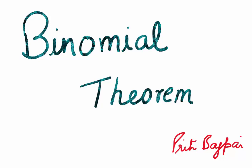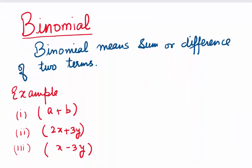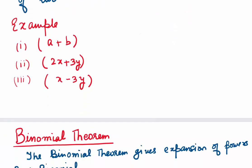Hi everyone. Welcome to today's lecture on binomial theorem. Let's start with what does binomial mean? Binomial means sum or difference of two terms. Let's look at some examples: a plus b, where we have added two terms a and b; 2x plus 3y; x minus 3y. They are all examples of binomial.